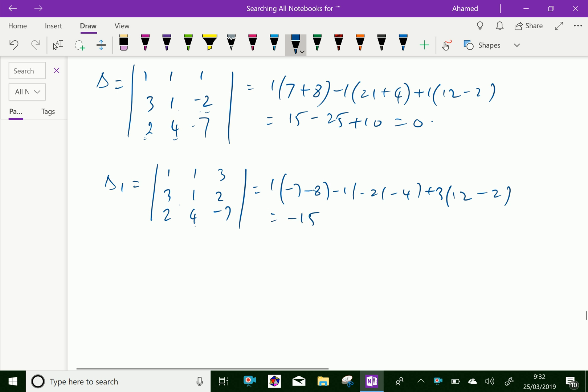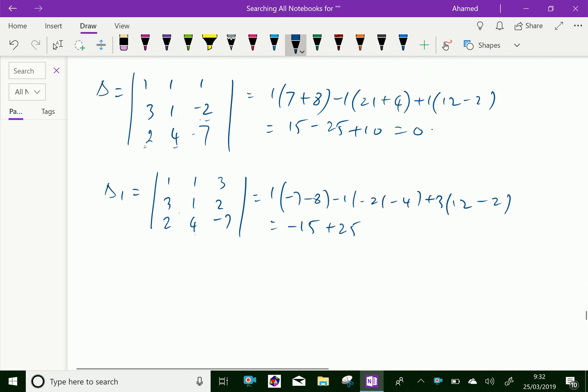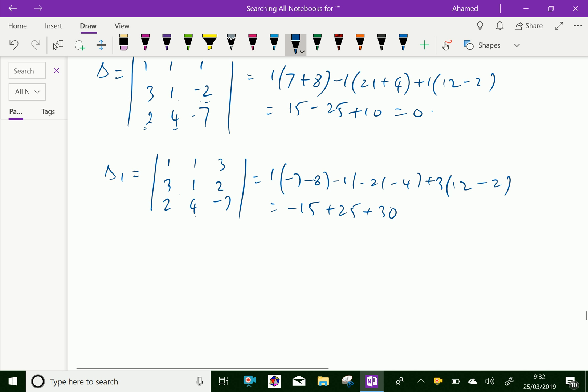Which gives -15, -25, that is plus 25, and plus 30. 30 plus 25 is 55. 55 minus 15 is 40, which equals 40, which is not equal to 0. So this is enough condition.